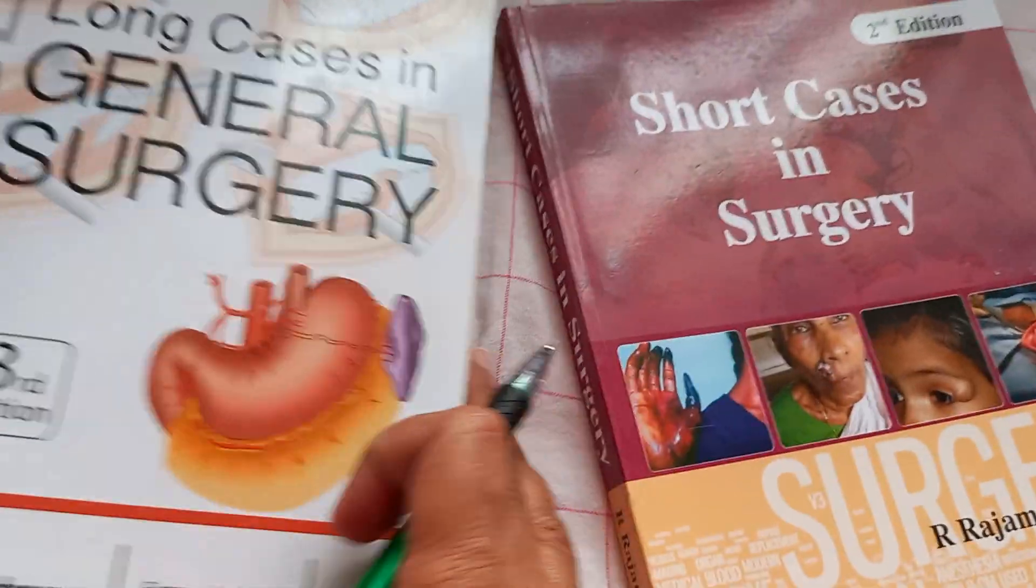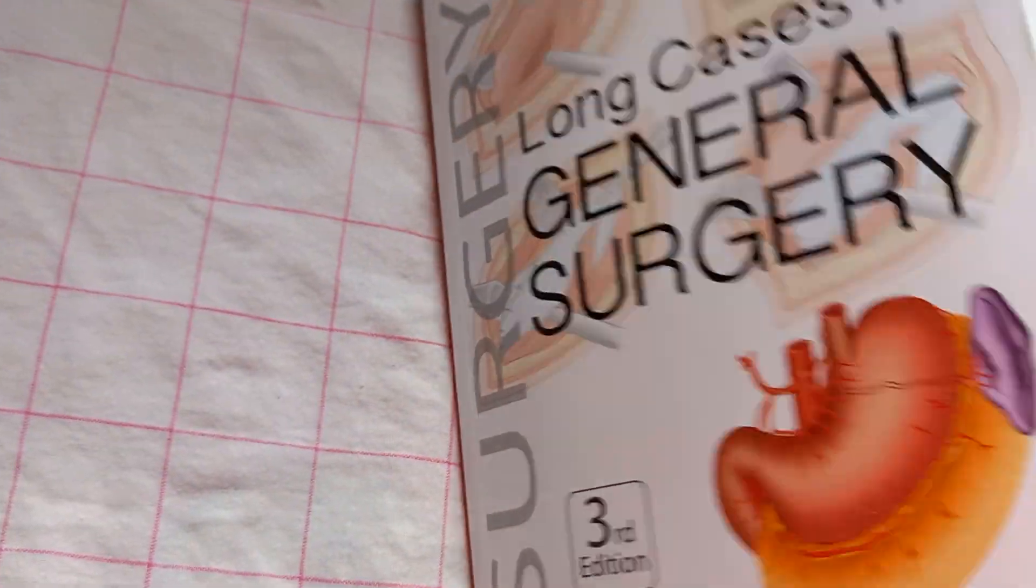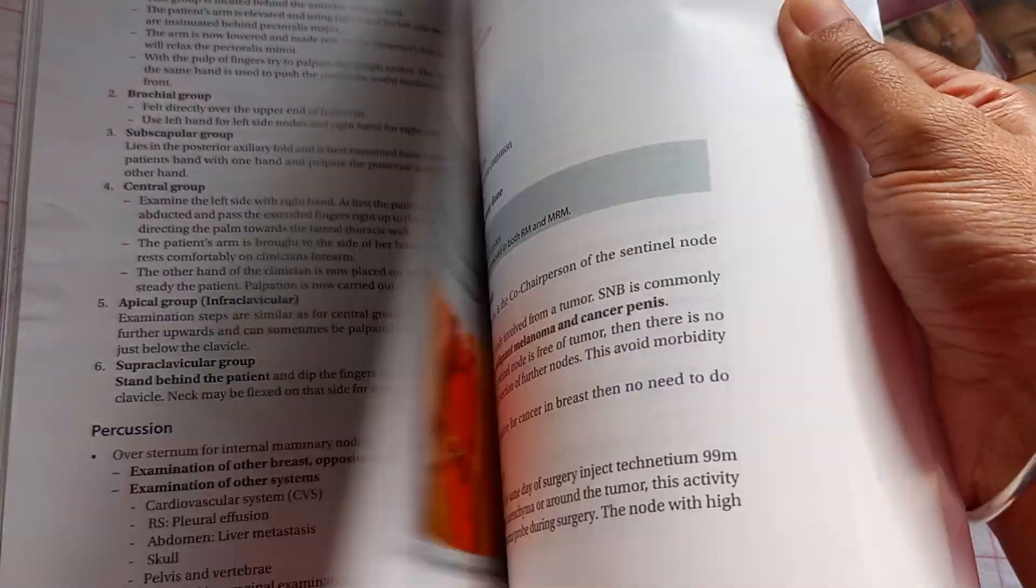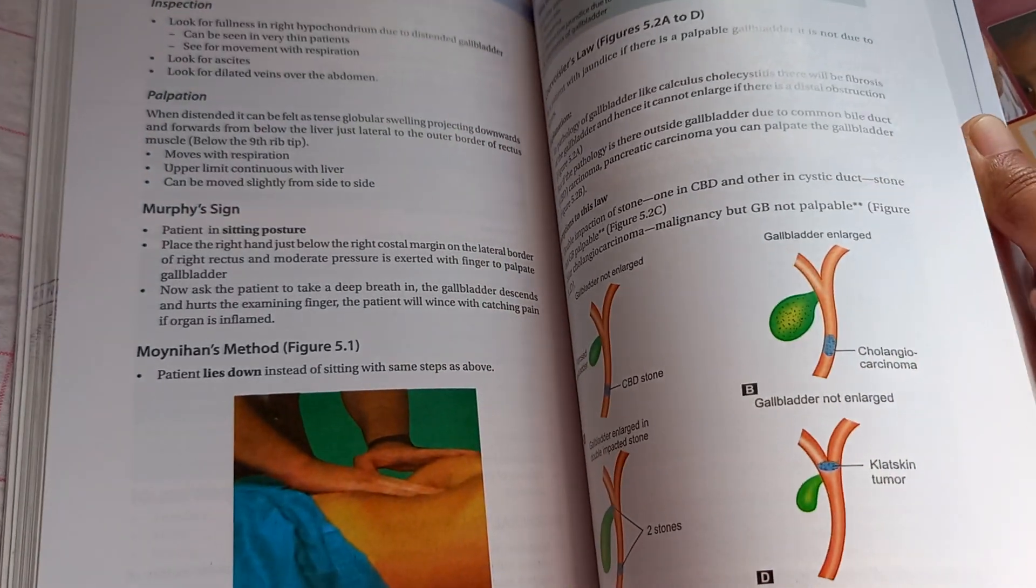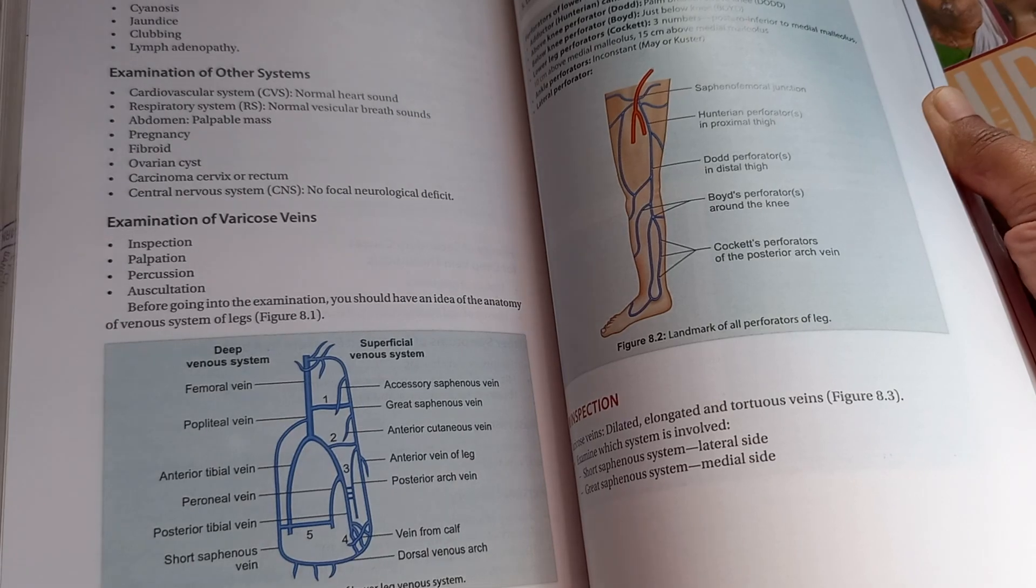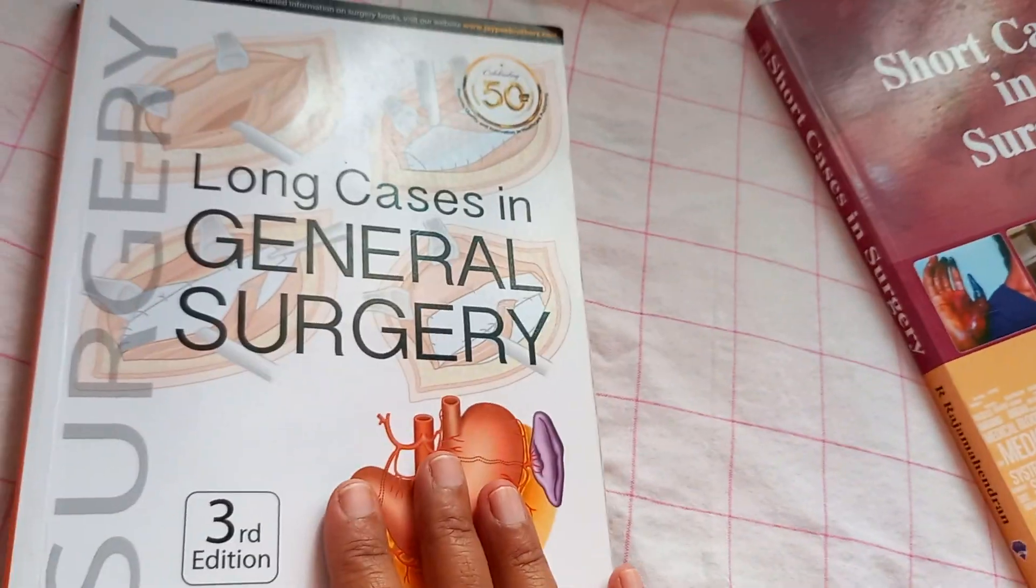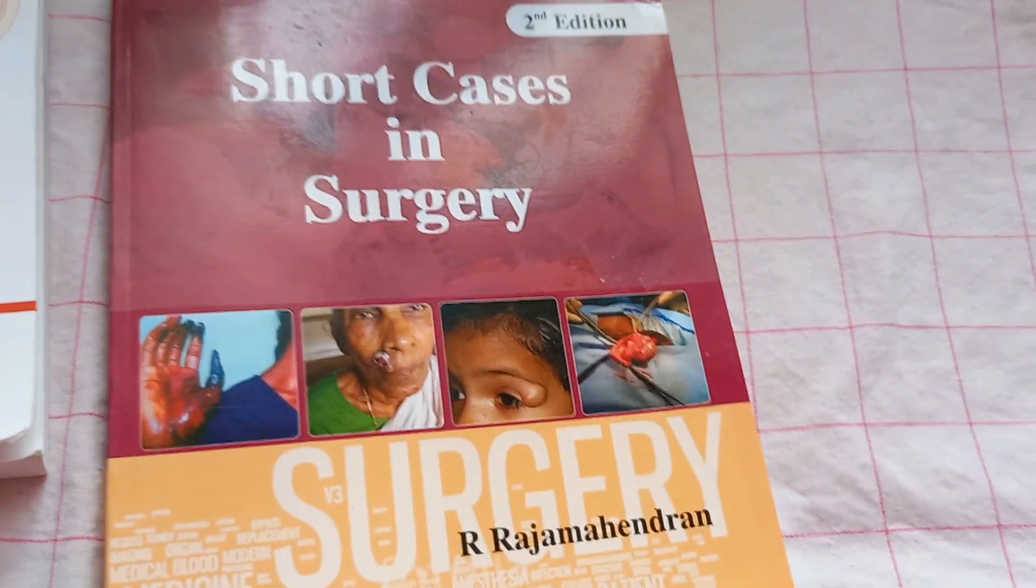And let us now look at what is there in short cases in surgery. I think before that, let me show you this long cases in general surgery, how the book is inside. Any case that you take, there is a lot of information about the case. How to palpate, how to examine, how to treat, what are the complications of the treatment, operative procedure, everything they are covering. According to me, this is a very, very useful book. Because instead of running around on the last day of your exam, buy this in the beginning itself. It will save a lot of time. Now, coming to short cases in surgery, let us see what is there.